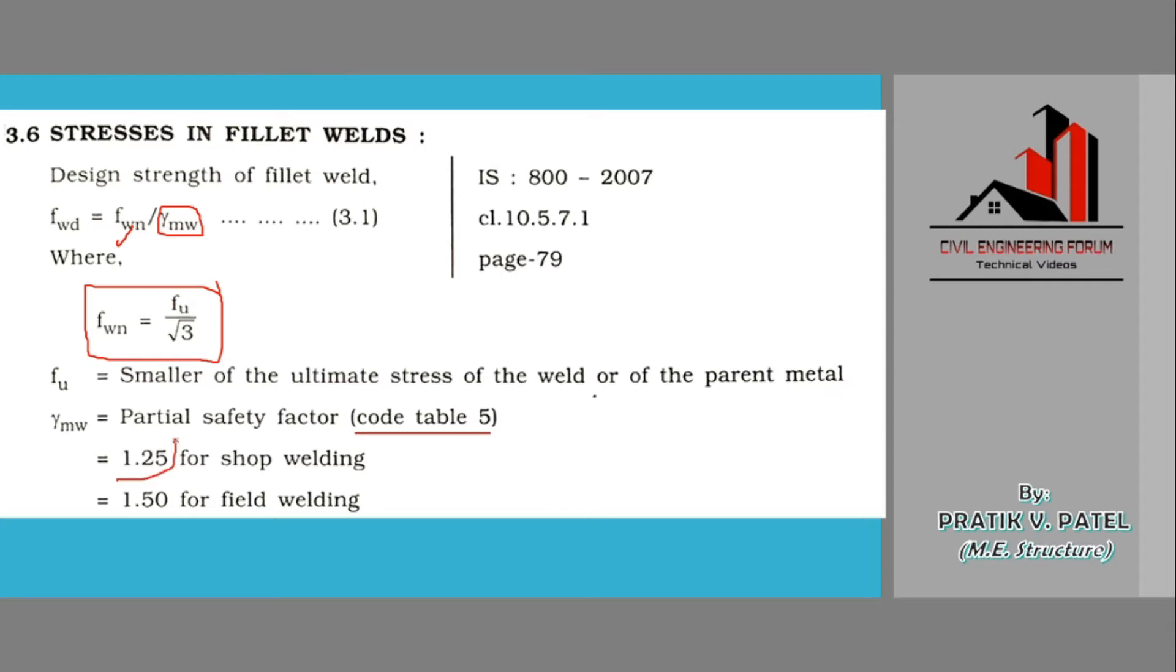If the welding is shop welding, then gamma mw value would be 1.25, and if the welding done is field welding, welding is on the field, then it would be 1.50. So we can directly put up the values in this formula, that is value of fwn as fu upon square root 3, and gamma mw as 1.25 or 1.5 for field welding.